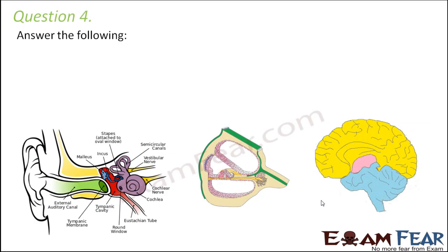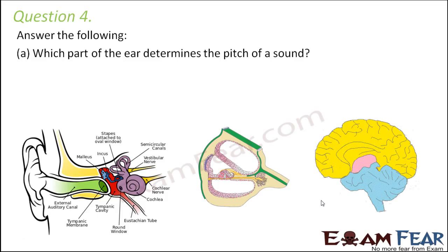Question number 4: which part of the ear determines the pitch of a sound? Recap: the outer ear only helps make sound waves travel inside. The middle ear helps to efficiently transmit the sound waves. The sound waves are actually determined in the inner ear, where the auditory receptors are present.